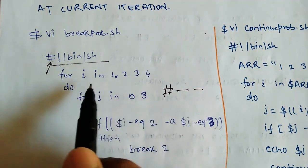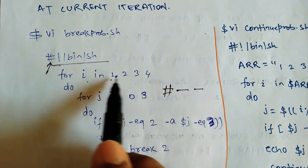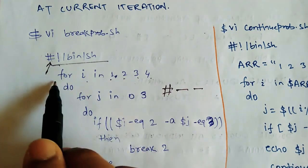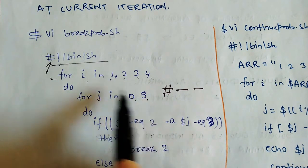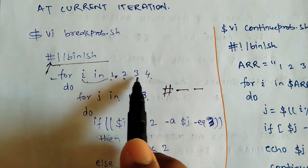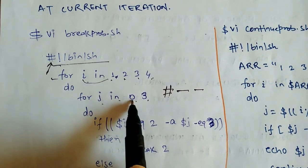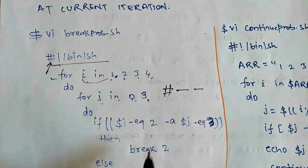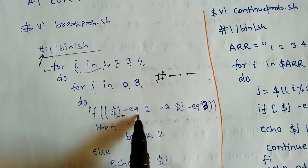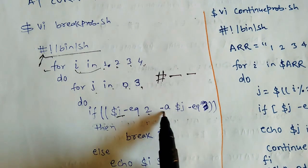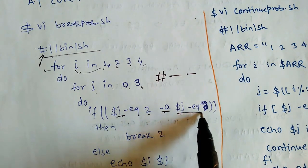We have one loop. I value is 1, 2, 3, 4. It will go 4 times. And we have another inner loop. J, 0 and 3. So I value is 1, 2, 3, 4, and J value is 0 and the other is 3. So we have a condition. If $i is equal to 2 and this is for logical and, $j is equal to 3. If this is such a case, then we will break it.